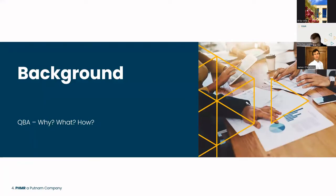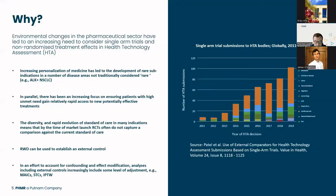Let's start with some background. Why would QBA for unmeasured confounding be useful in an HTA setting? Increasing personalisation of medicine has led to the development of rare sub-conditions in disease areas not traditionally considered rare — for example, EGF-positive patients in non-small cell lung cancer. The conduct of randomised controlled trials is challenging in rare indications, particularly when combined with high unmet need.